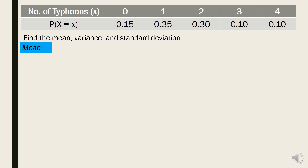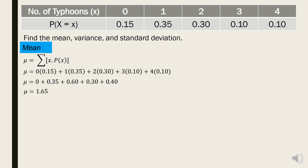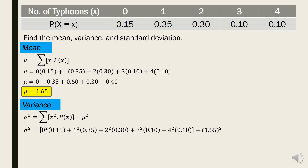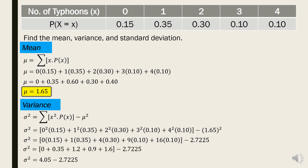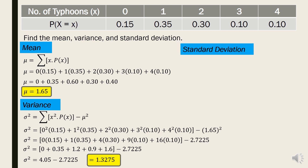Using the formula for the mean, the mean is 1.65. Using the variance formula, substituting and simplifying, the variance is 1.327. Since we have the variance, we take its square root to find the standard deviation, which is approximately 1.15.